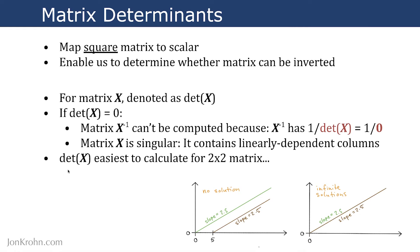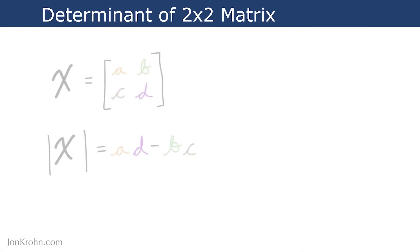Now, how do we actually calculate the determinant? Well, it's easiest to calculate for a 2x2 matrix. So let's start there. Let's say we have this matrix X here, where all of the numbers are color-coded letters.